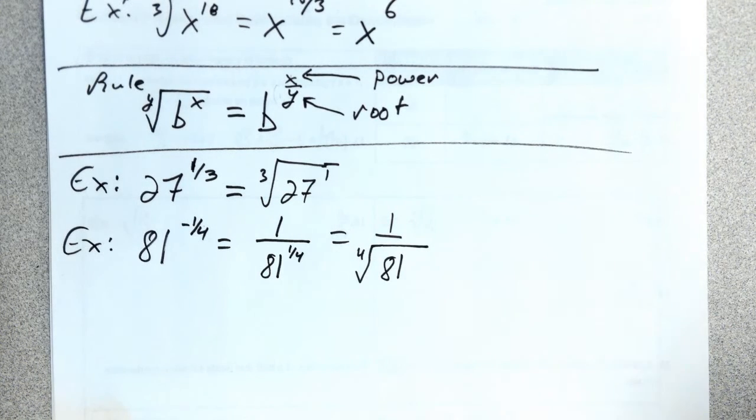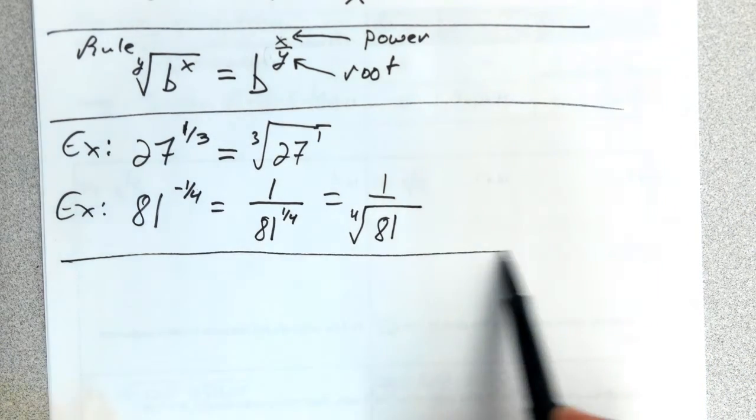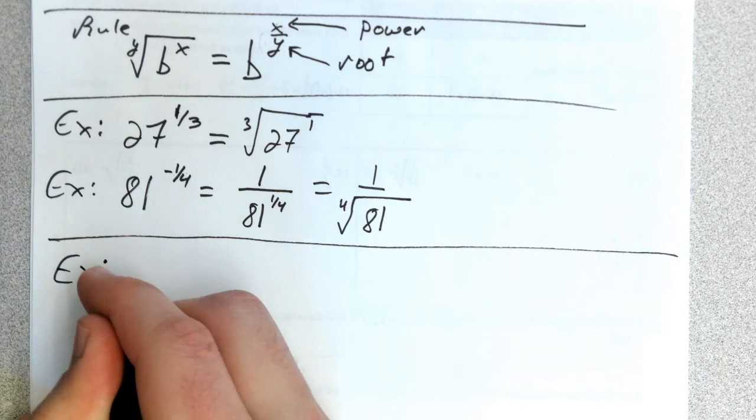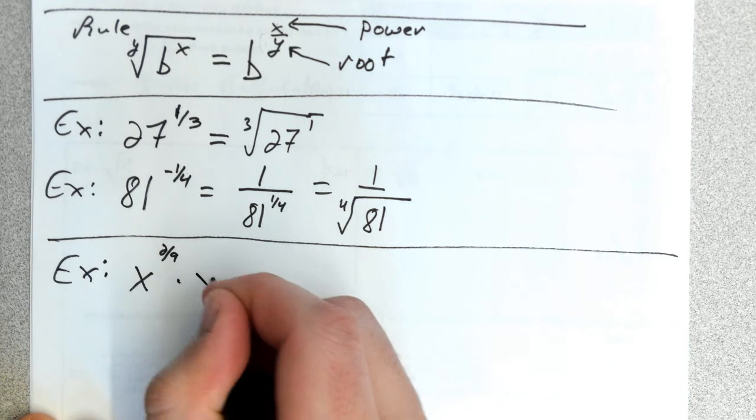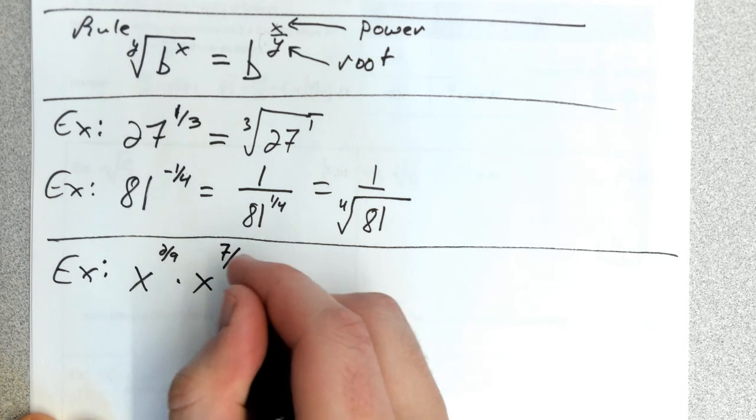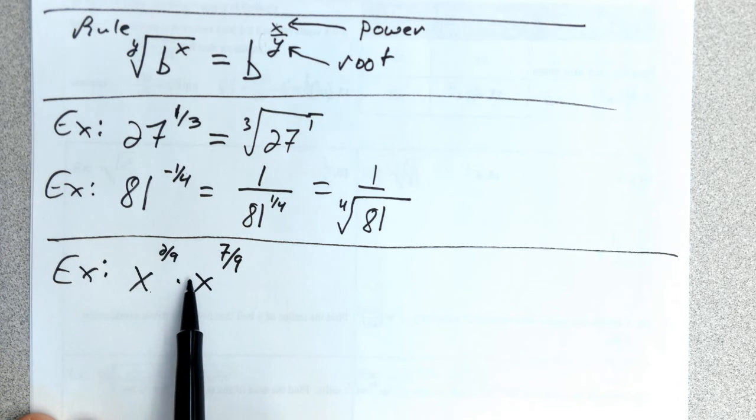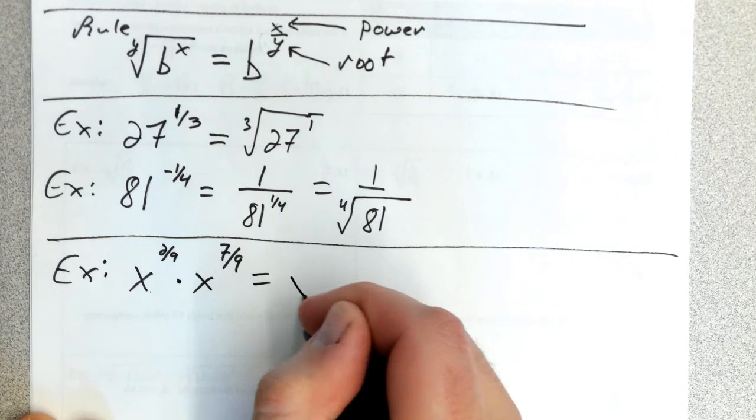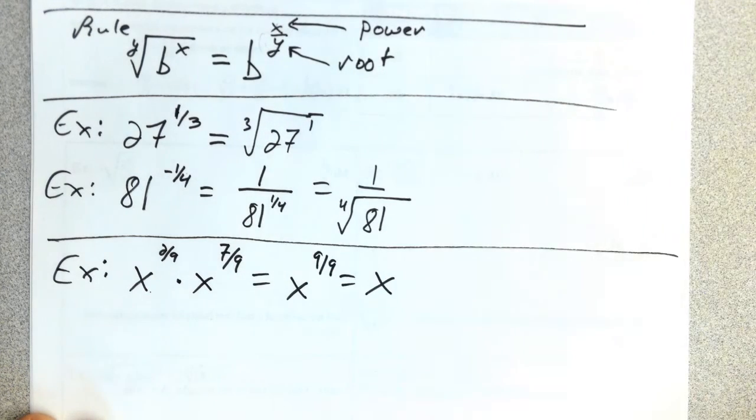For instance, if you have x^(2/9) times x^(7/9), you can add the exponents because you have the same base. You're multiplying powers, so add exponents: x^(9/9), which is just x.